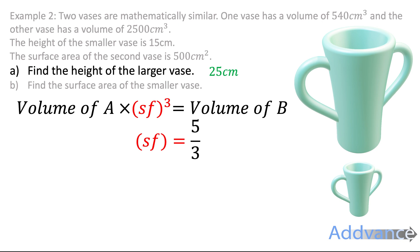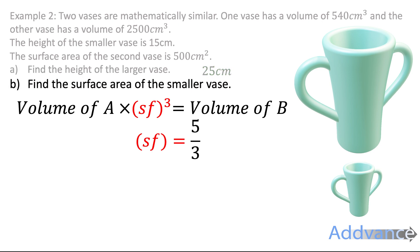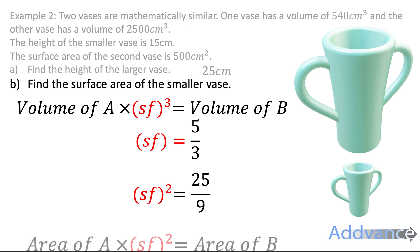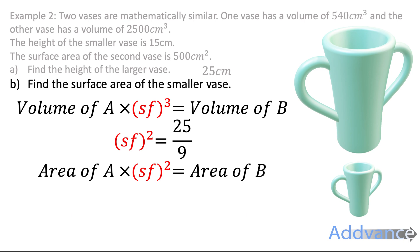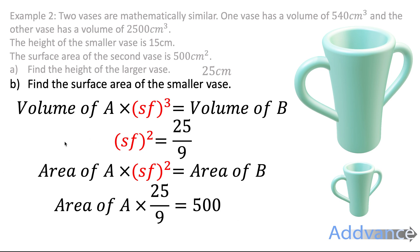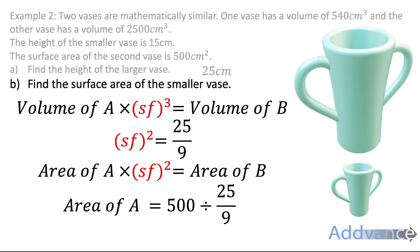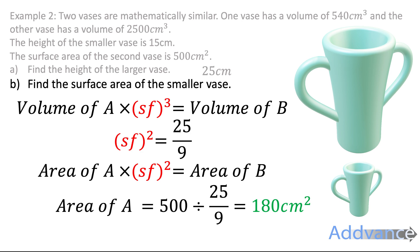For the surface area of the smaller vase: we know the larger vase has an area of 500. The area scale factor is 5 thirds squared, which on your calculator gives 25 over 9. So the area of A times 25 over 9 equals 500. We do the opposite — divide by 25 over 9 — and the area of A equals 500 divided by 25 over 9. Doing this on your calculator gives 180 cm squared. That is the final answer.